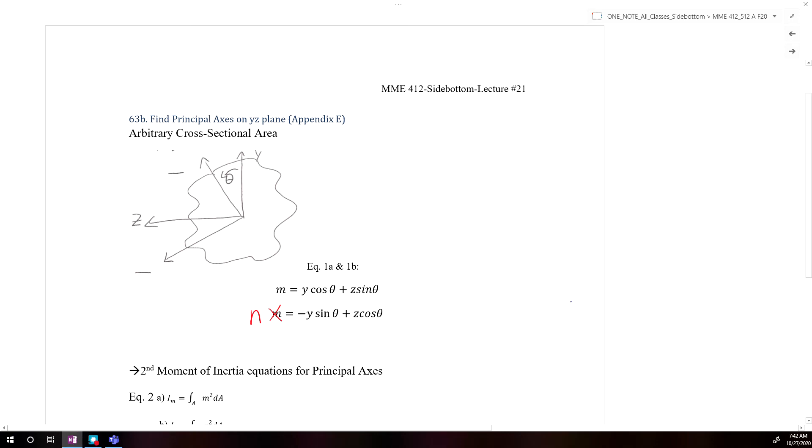In order to find the principal axes M and N, we need to take a look at an arbitrary cross-section. We're going to define that the angle between our y and z axes to our two principal axes M and N can be defined by some angle theta.